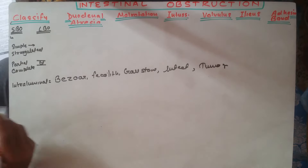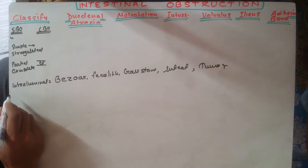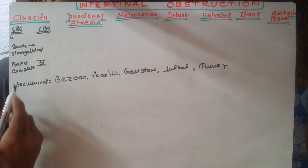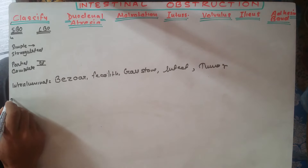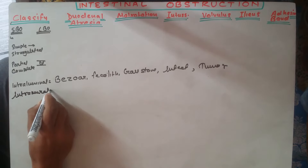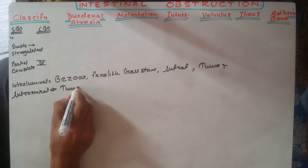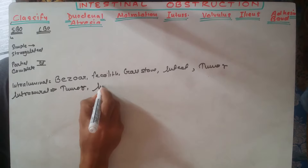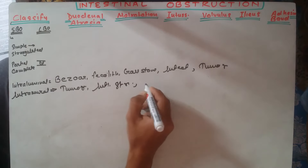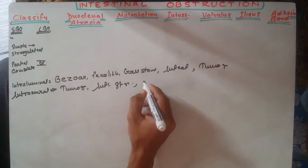Intramural means something in the wall of the intestine. If there is disease in the gut wall, that will be called intramural, which can be due to a tumor in the wall, inflammatory stricture, or inflammatory diseases like Crohn's disease or diverticulitis.